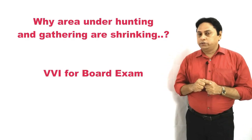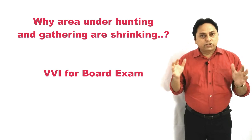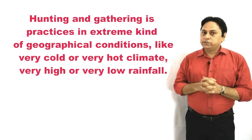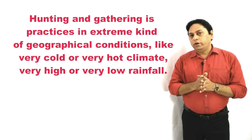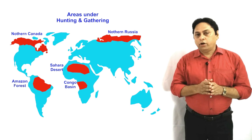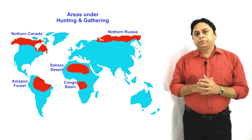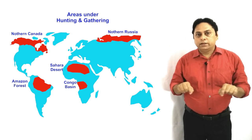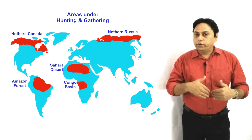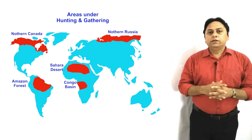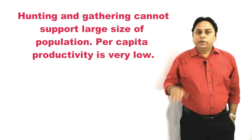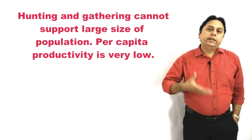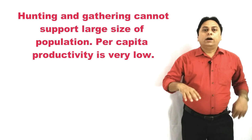An important question in examinations is: why is the area under hunting and gathering shrinking? Hunting and gathering is practiced mainly in very extreme geographical conditions — either very hot deserts like the Sahara, or very high rainfall areas like the rainforests of the Amazon Basin in South America, or very cold areas like Northern Canada and Northern Russia. Hunting and gathering cannot support a large size of population, and per capita productivity is very low — the income-generating capacity is very small.